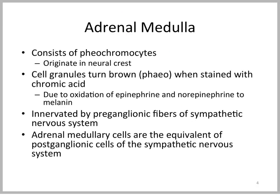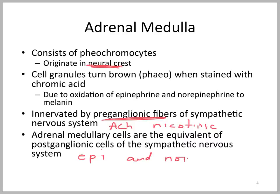The adrenal medulla consists of what are called pheochromocytes, which originate in the neural crest during development. These are known for their cell granules that turn brown — that's what 'pheo' stands for in Greek — when stained with chromic acid, due to the oxidation of epinephrine and norepinephrine to melanin. Importantly, the adrenal medulla is innervated by pre-ganglionic fibers of the sympathetic nervous system. The neurotransmitter here is acetylcholine acting on nicotinic receptors in this ganglion. The adrenal medulla cells are essentially the equivalent of post-ganglionic cells of the sympathetic nervous system, producing epinephrine and norepinephrine.